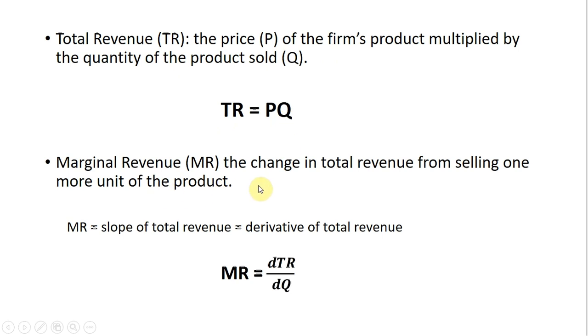Marginal revenue would be the change in total revenue from selling one more unit of the good or the product. So what happens to our total revenue if we sell one more unit? Does it go up by $2, $3, $10? That's what we're trying to figure out with marginal revenue.